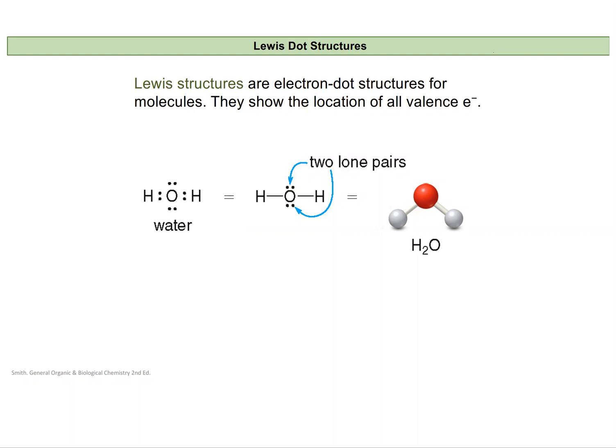Now that we have defined what covalent bonding is, let's take a look at our easiest way of representing covalent bonds — that's with Lewis dot structures. These use the electron dot symbols that show the location of all the valence electrons, organized to pair up our unpaired electrons and show the valence electrons that are bonding and the valence electrons that are lone pairs.